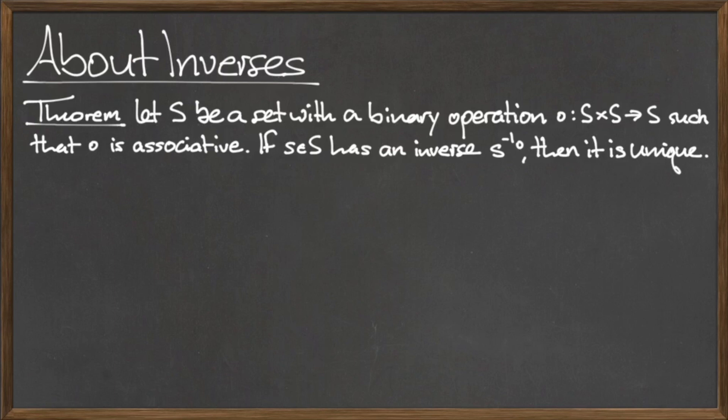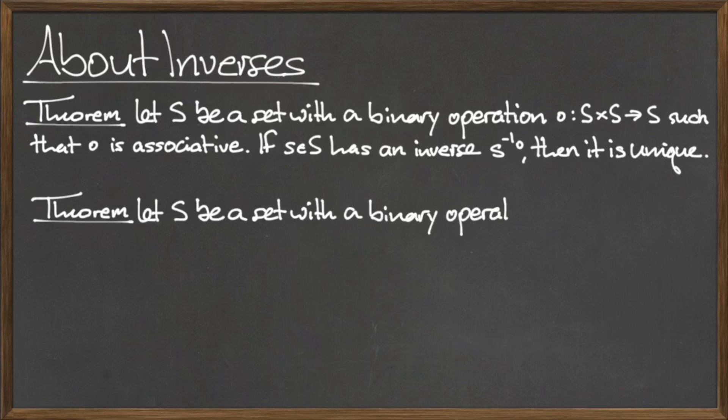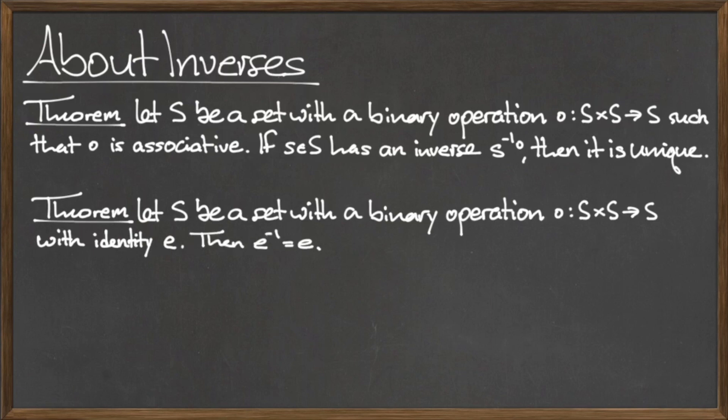The second theorem concerns the inverse of the identity. Let S be a set with a binary operation dot from S cross S to S with identity element e. Then e-inverse equals e. In other words, the identity element with respect to a certain binary operation dot is its own inverse.